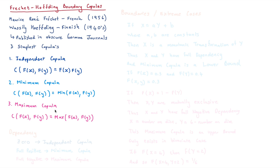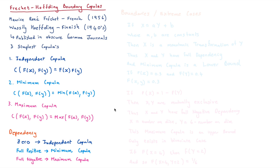Minimum and maximum are a little bit harder to comprehend than the independent copula, so we'll talk more about them. They all relate to dependency. When we have zero dependency, we have the independent copula. When we have full positive dependency, we have the minimum copula. You can think of this as cents and dollars — if you've got five dollars, you've got five hundred cents. The two are fully positively dependent. So the probability of having more than five dollars and more than 40 cents is simply going to be the minimum of the two.